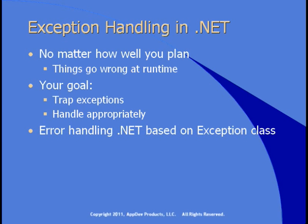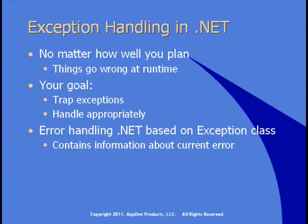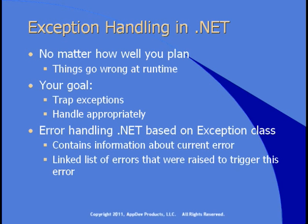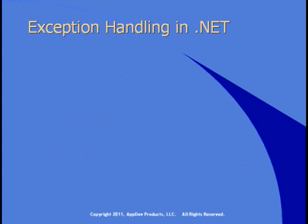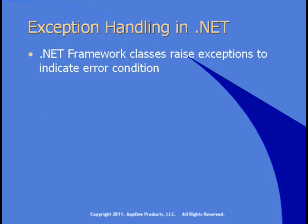In .NET, error handling is based on the exception class. The exception class contains information about the current error and also contains a linked list of errors. It keeps track of which methods or classes you called and therefore where in your stack of code the error occurred. You can inherit from the exception class and create your own custom exception handling. Built into the .NET framework classes is the ability to raise exceptions to indicate error conditions, so when issues occur the classes will let you know.